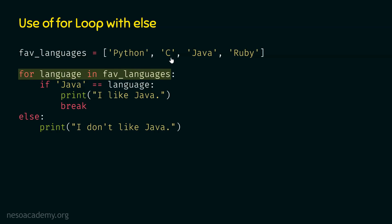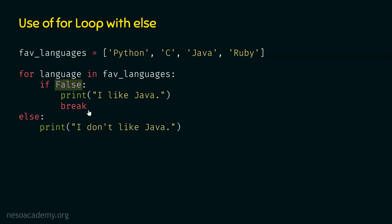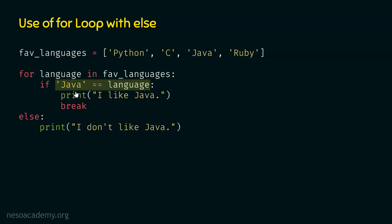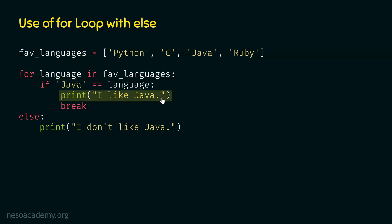Next, language variable is pointing to C. We check: is Java equal to C? No, this is false again, so those statements will not be executed. Then language points to Java. We check: is Java equal to Java? Yes — the condition is satisfied, so the print statement executes and 'I like Java' is printed on the screen.